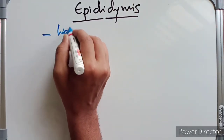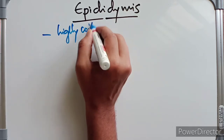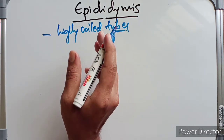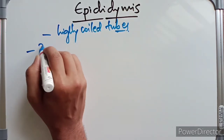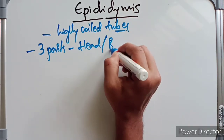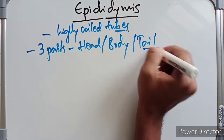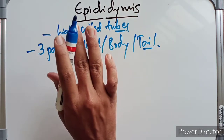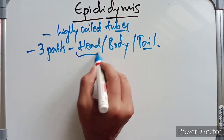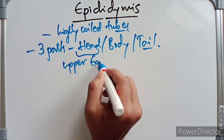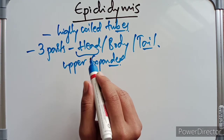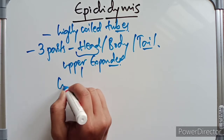The epididymis is made up of highly coiled tubes. Coming to the parts of the epididymis, it is divided into three parts: the head, body, and tail. The head is the upper expanded part and it is connected to the upper pole of the testis by the efferent ductules.